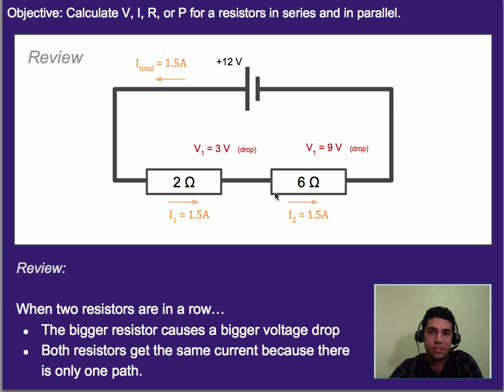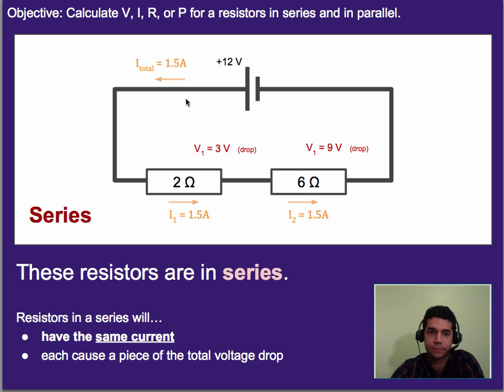It would be like if everyone was in a single file line in a narrow hallway where they have nowhere else to go. You know that if somebody enters that hallway, eventually they're going to have to exit that hallway, because there's really just nowhere else to go. This is in fact called a series circuit, or these resistors are said to be in series is a more accurate way of saying that. So series just means one after another. In this case, we have one resistor after another, and so this is an example of two resistors in series.